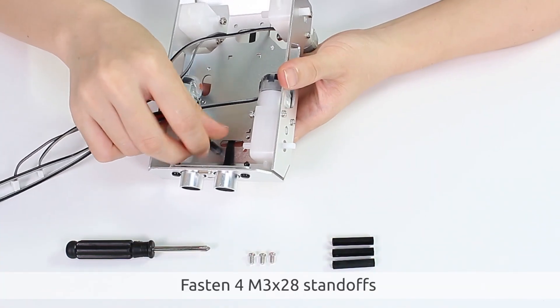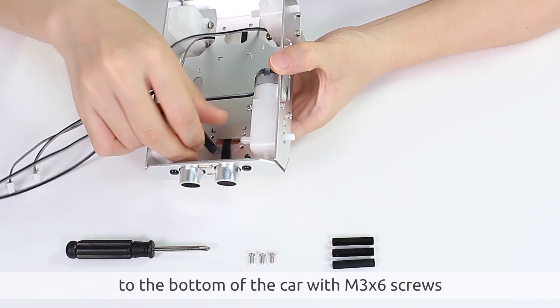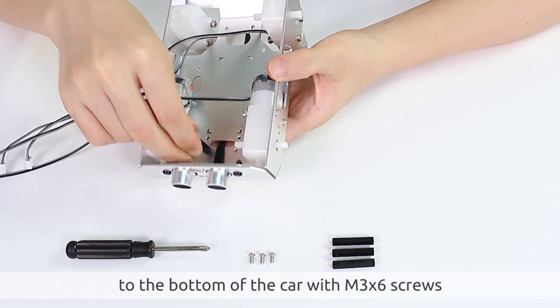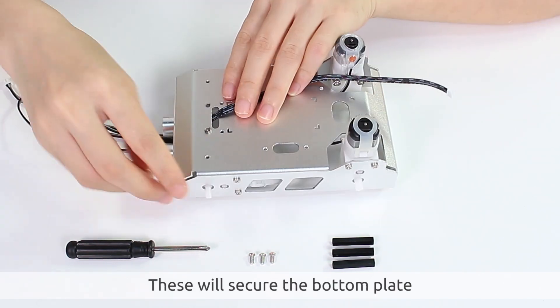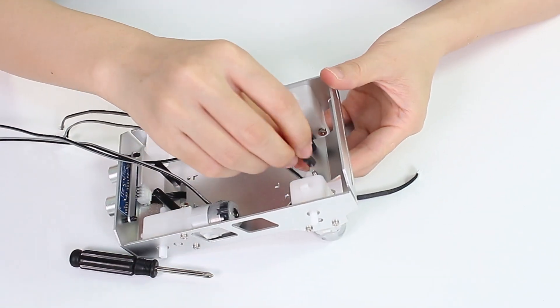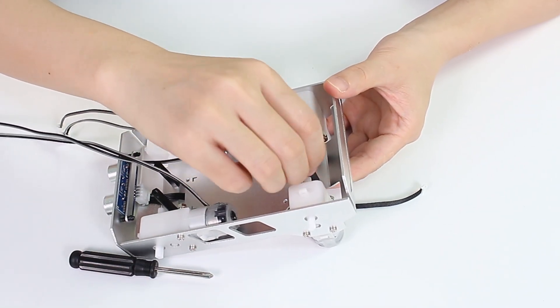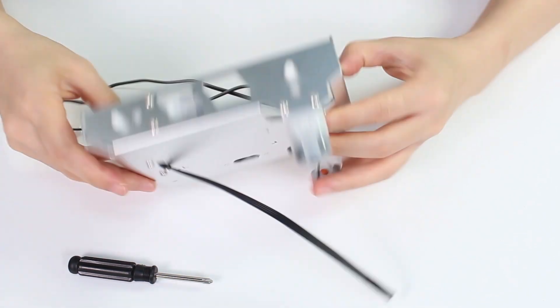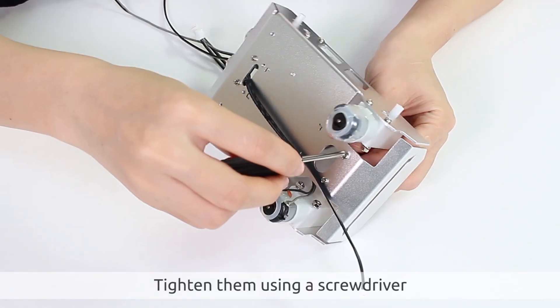Fasten four M3 x 28 standoffs to the bottom of the car with M3 x 6 screws. These will secure the bottom plate. Tighten them using a screwdriver.